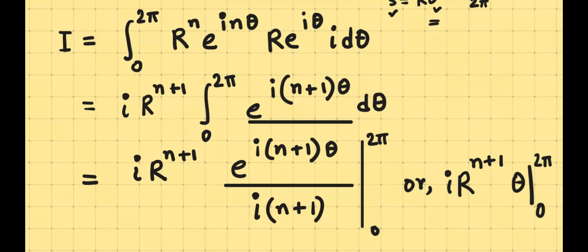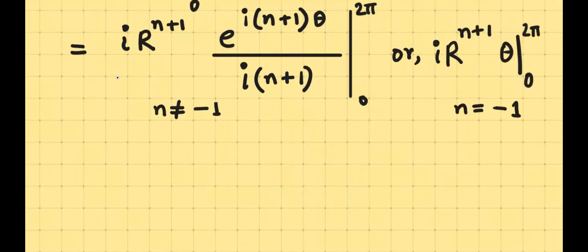So we have two distinct results. The first one is when n is not equal to negative 1, and the second one is when n is in fact equal to negative 1. In the first case, we find out that this result is 0, because e to the power 2πi is the same as e to the power 0, and nothing else changes. So therefore, this is going to be 0. In fact, to be more specific, e to the power 0 equals e to the power 2πi equals 1.